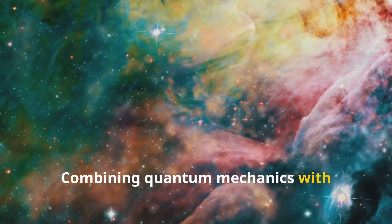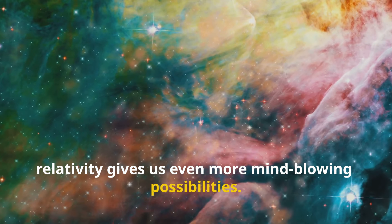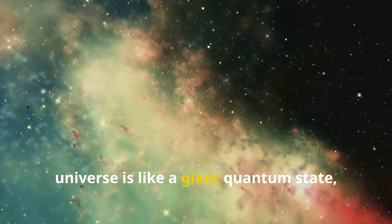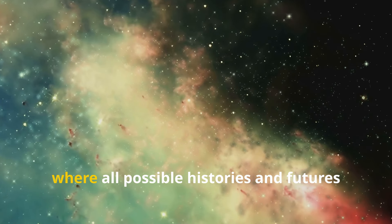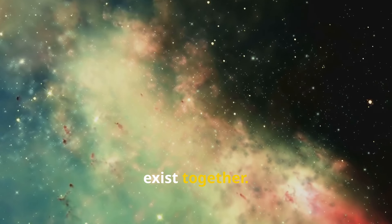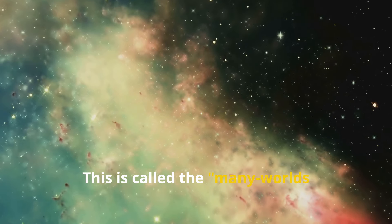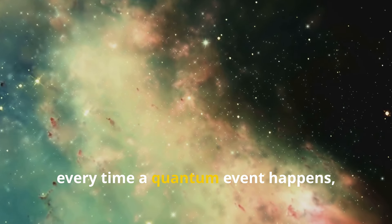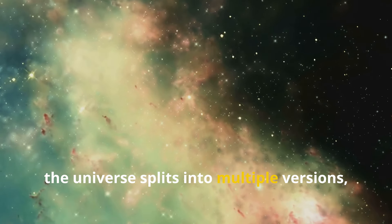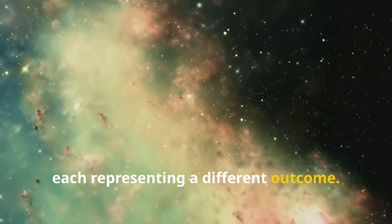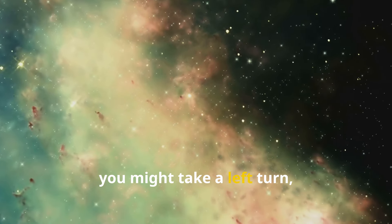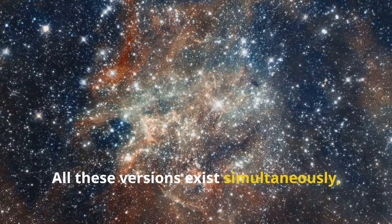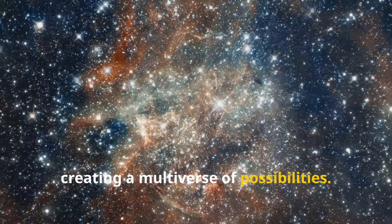Combining quantum mechanics with relativity gives us even more mind-blowing possibilities. Some physicists suggest that the entire universe is like a giant quantum state, where all possible histories and futures exist together. This is called the many worlds interpretation. According to this view, every time a quantum event happens, the universe splits into multiple versions, each representing a different outcome. In one version, you might take a left turn, and in another, you take a right turn. All these versions exist simultaneously, creating a multiverse of possibilities.